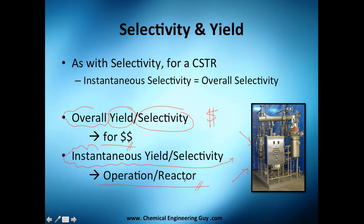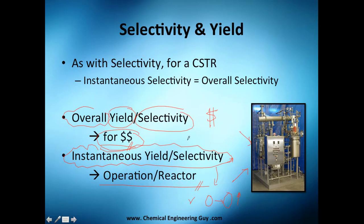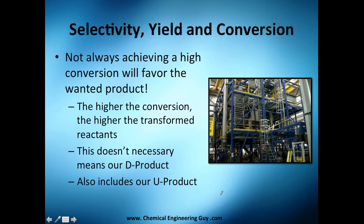It depends on your audience. You'll likely talk to your boss about money, so you first do the rate analysis — instantaneous yields and selectivities — and determine if changing the reactors gives better performance. Then you translate that into flow rates and money generated by the new idea. Keep in mind: good conversion does not mean good selectivity or good yield, and a good selectivity and yield may come with very low conversion.